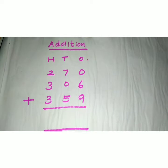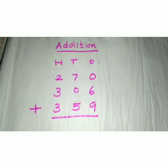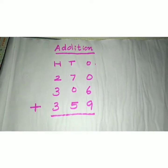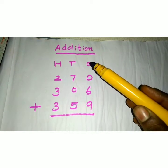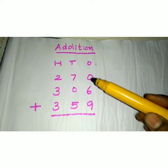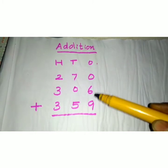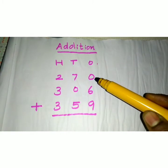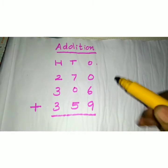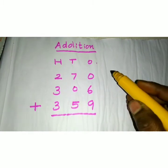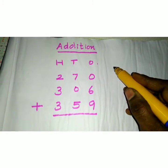Listen, consider the first problem: addition. Here, we are going to add 3 three-digit numbers: 270, 306, and 359. We are going to add all these 3 three-digit numbers together. Now, consider the ones place: 0, 6, 9. We have to add these 3 numbers.